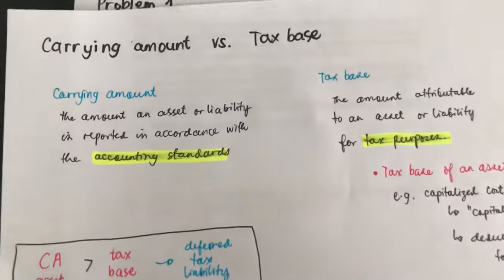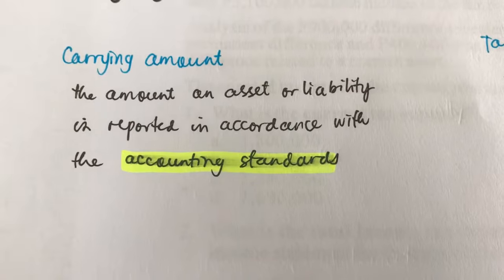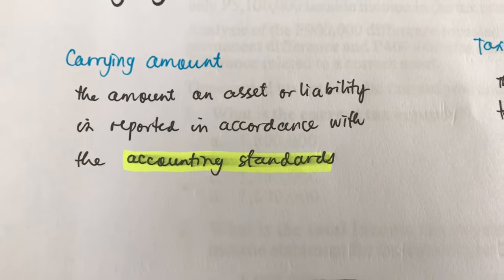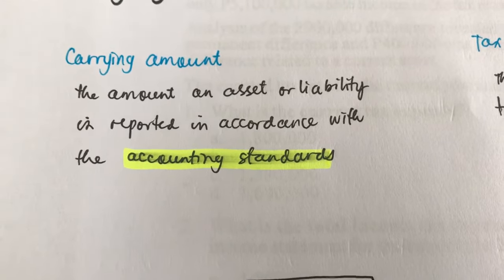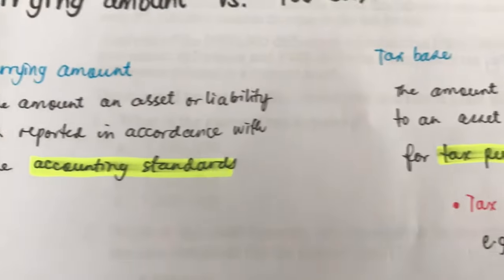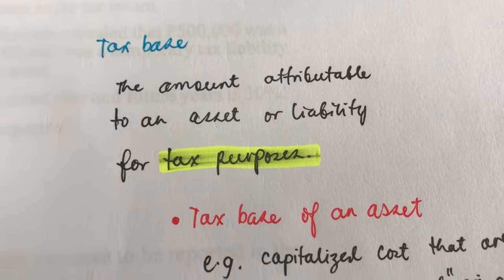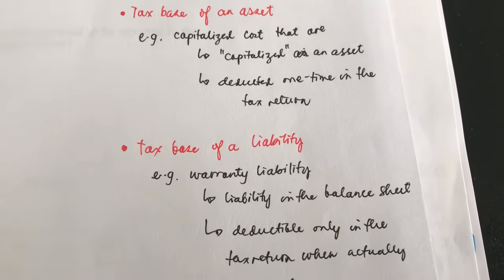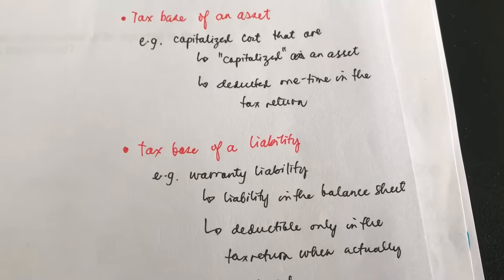Let's discuss the carrying amount of an asset or liability versus the tax base. The carrying amount is reported in accordance with accounting standards — it's what we record in the financial statements. The tax base, however, is the amount of an asset or liability recorded for tax purposes. For assets, the tax base refers to costs that are either capitalized as an asset or deducted one time in the tax return.